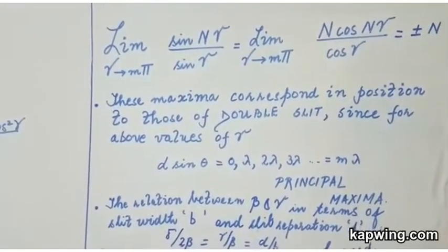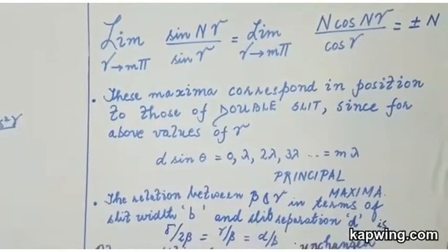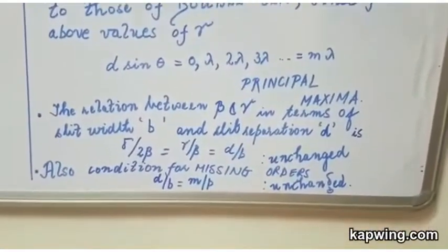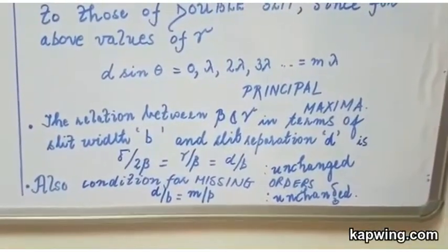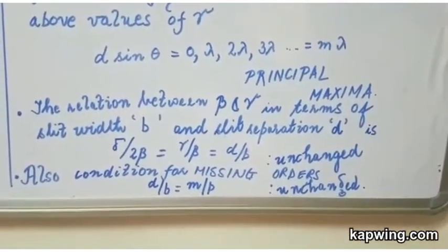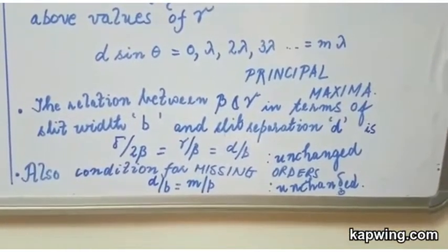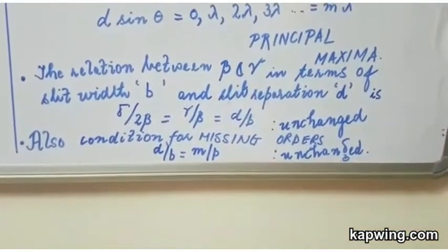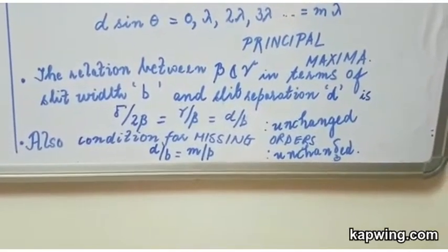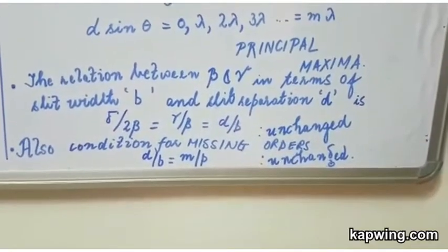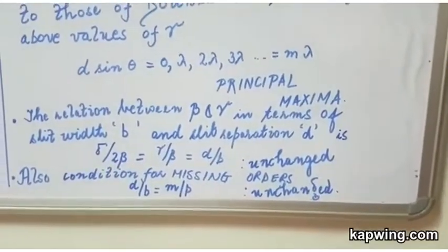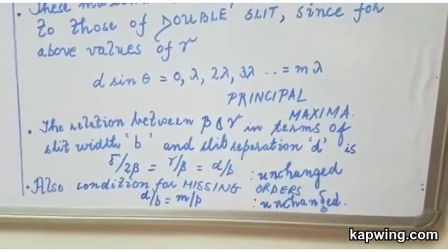In fact this is the grating equation d sin theta is equal to m lambda. Now the relation between beta and gamma in terms of the slit width b and the slit separation d is given by delta upon 2 beta equal to gamma upon beta equal to d upon b. It is unchanged with respect to the double slit. Also the condition for the missing orders d upon b is equal to m upon p where m and p are both integers this too remains unchanged. So we can safely say that the double slit is a special case of the grating. A double slit is the simplest example of a grating.